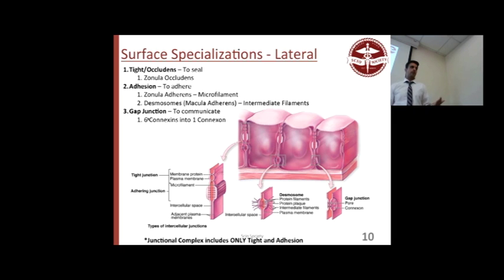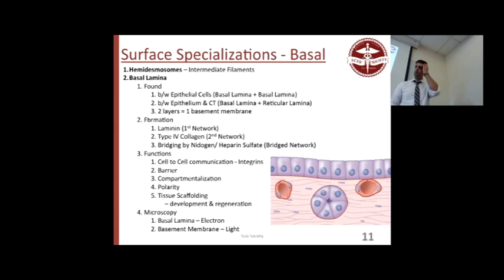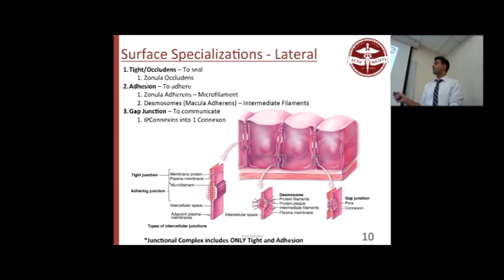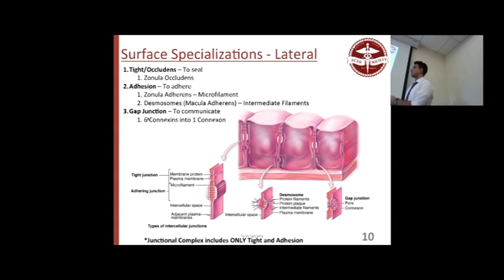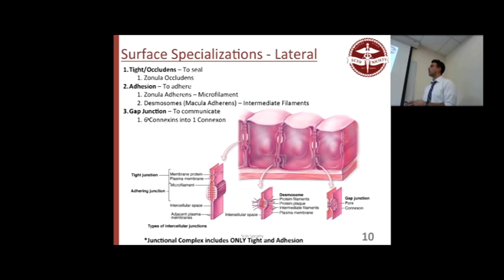Gap junctions are for communication between cells — same as in heart tissue. If asked what maintains cell integrity, it's intermediate filaments — if you don't have them, you'll rip the cell within itself. If you don't have microfilaments and zonula adherens, the cells rip apart from each other. So integrity of the individual cell is intermediate filaments; integrity between cells is microfilaments.